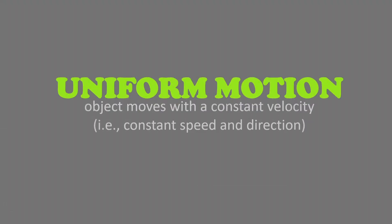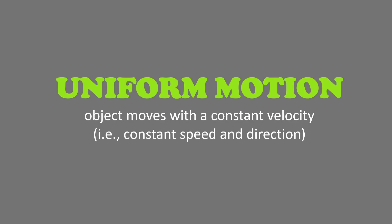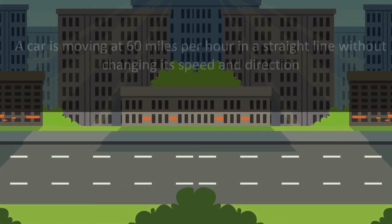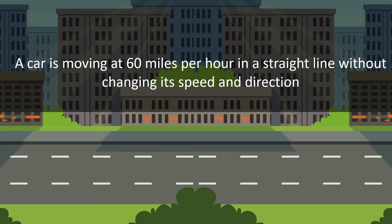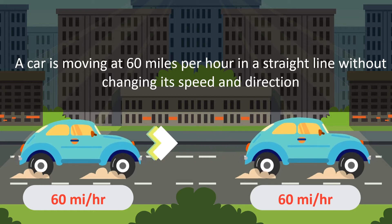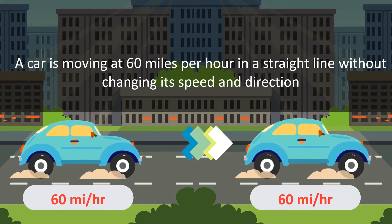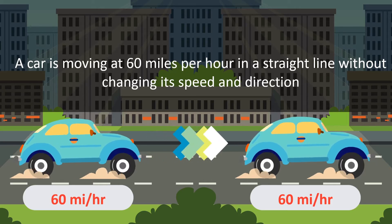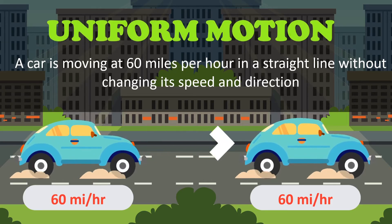When we say uniform motion, an object moves with a constant velocity — that means it has a constant speed and constant direction. A simple example is a car moving at a constant speed in a straight line. If the car is moving at 60 miles per hour in a straight line without changing its speed and direction, it is in uniform motion.